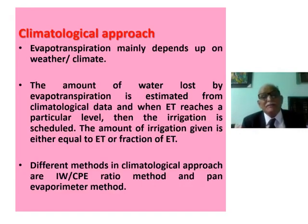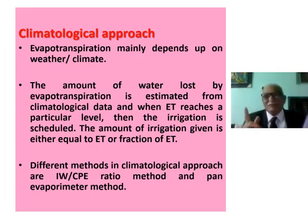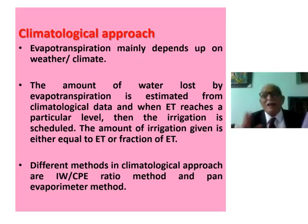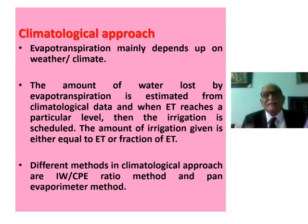The first climatological approach for irrigation scheduling is evapotranspiration. The amount of water lost by evapotranspiration is estimated from climatological data, and when it reaches a particular level, irrigation is scheduled.